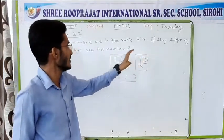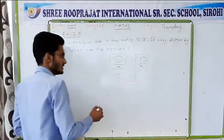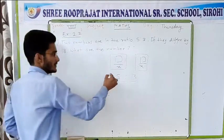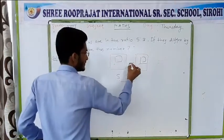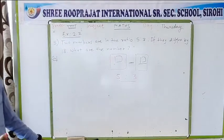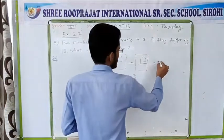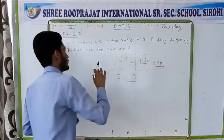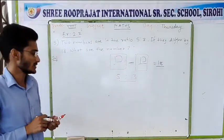The second condition given is: if they differ by 18. Differ means difference. The difference between both numbers — that means you subtract the smaller from the greater one — and you will get 18. So now you have to find out what are the numbers.